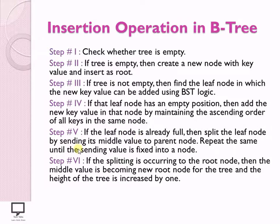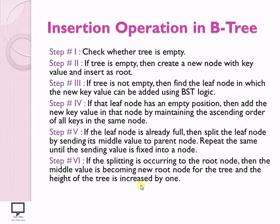Step 6: if the splitting reaches the root node, we find the middle element of the root and use it as the new root node — this is how we perform splitting of a root node. By doing so, the height of the tree increases by one. So by applying these six steps, you can insert a new key value into your B-Tree.